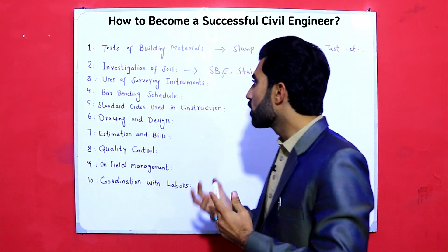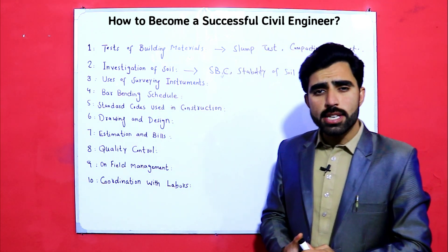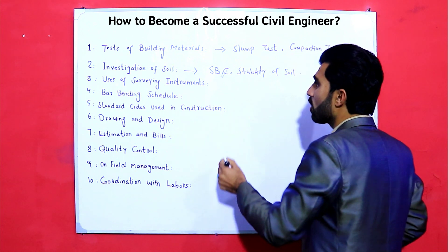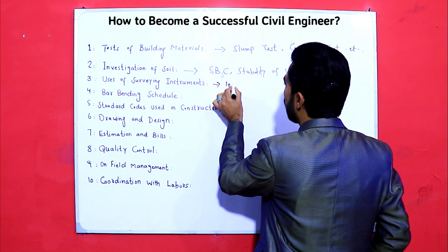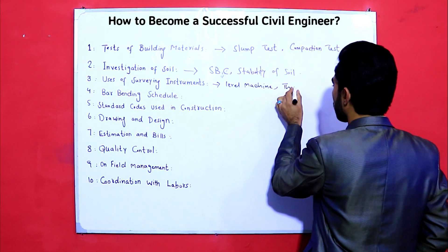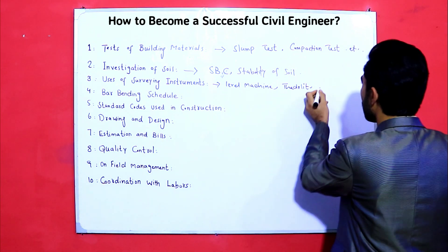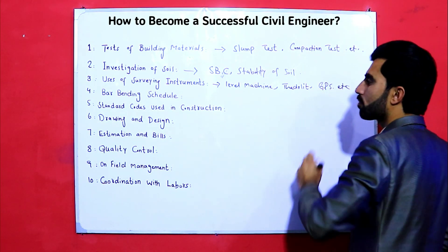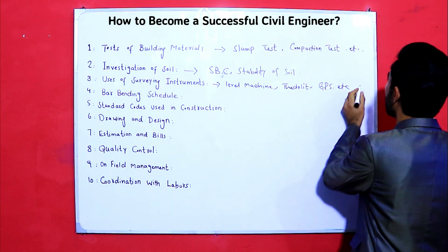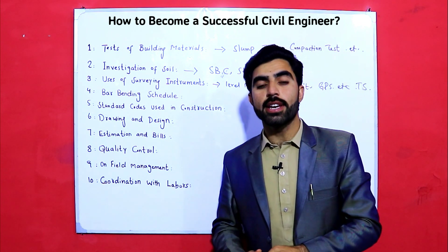The third requirement is uses of surveying instruments. Every civil engineering student should know the uses of surveying instruments if they want to become a successful civil engineer. These include the level machine, theodolite, compass, GPS, and total station (TS). You should know the uses of these different surveying instruments.